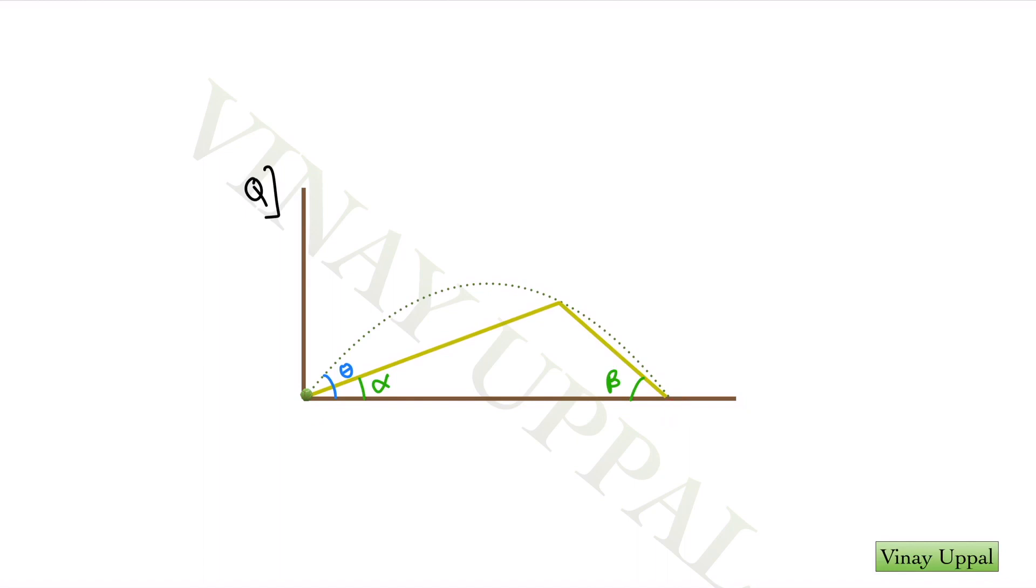So you should just graze the apex of this hill and land at the other side of the hill. And you need to basically find theta in terms of alpha and beta. Give it a try if you haven't already encountered this question.